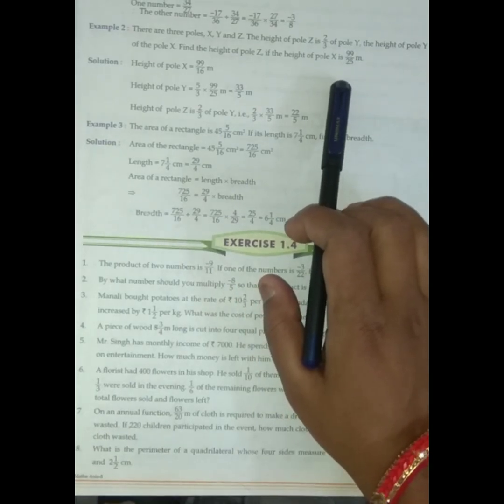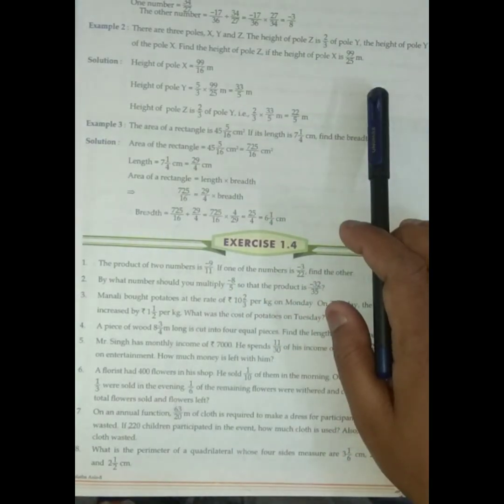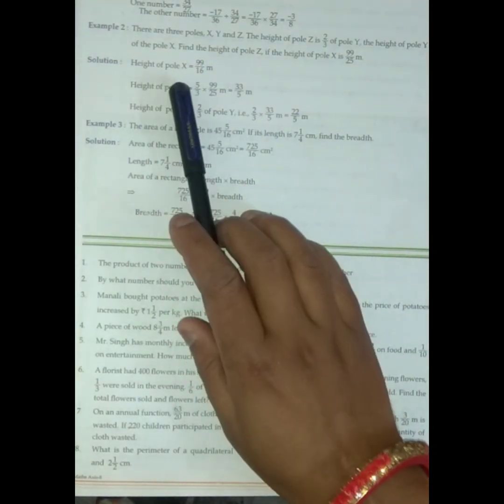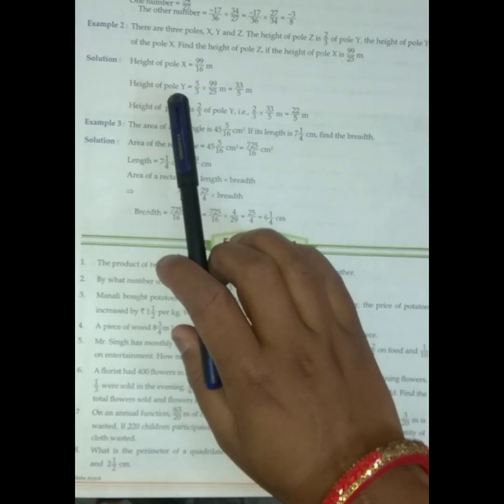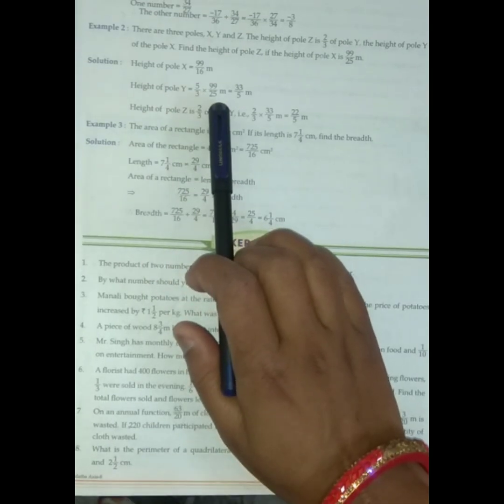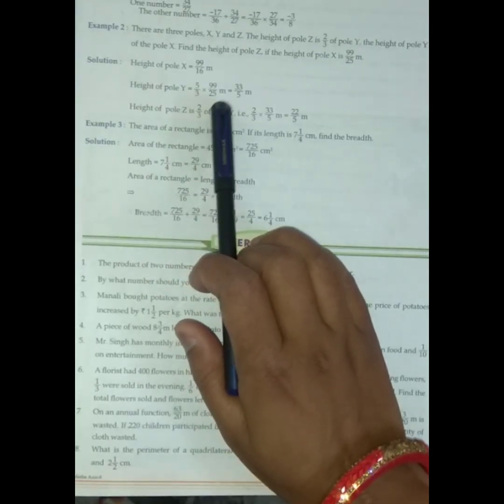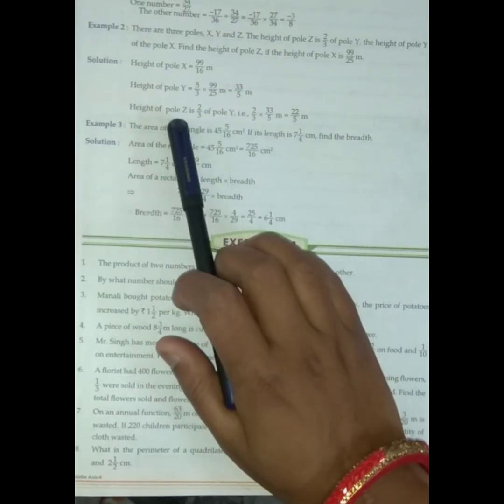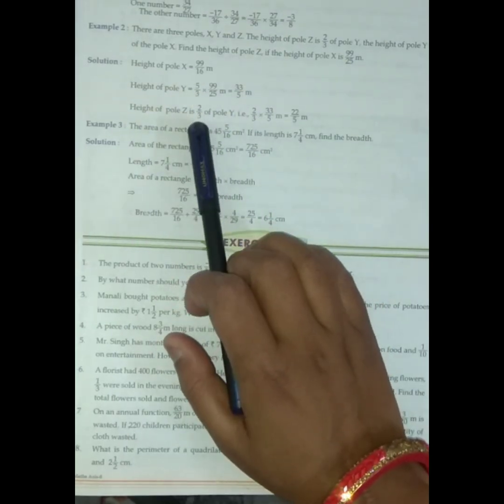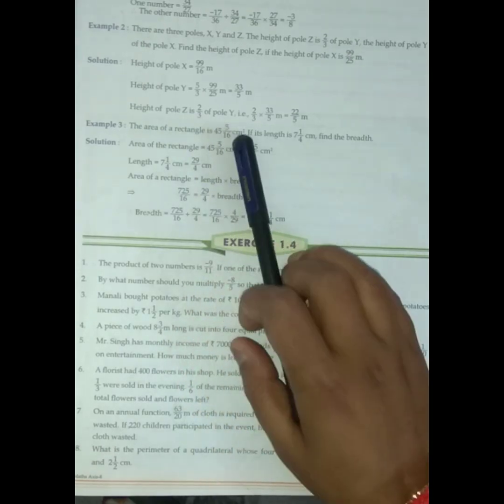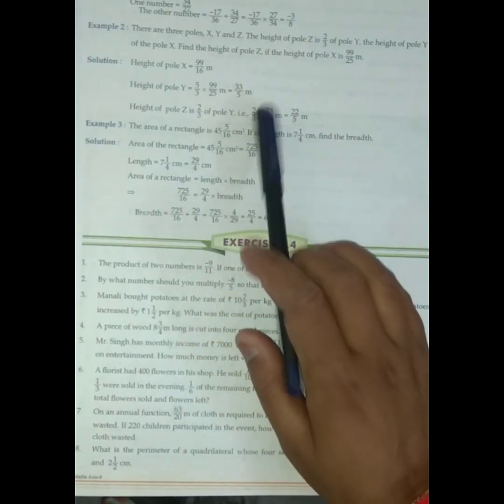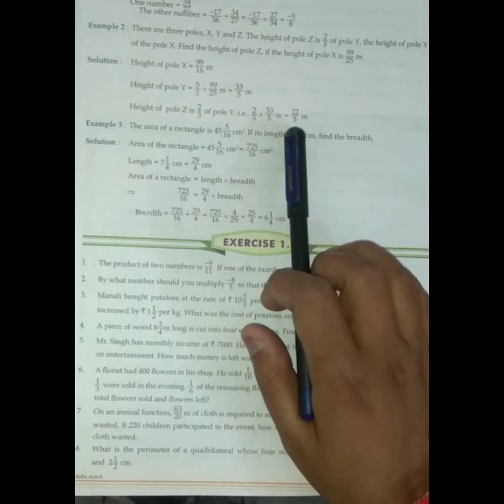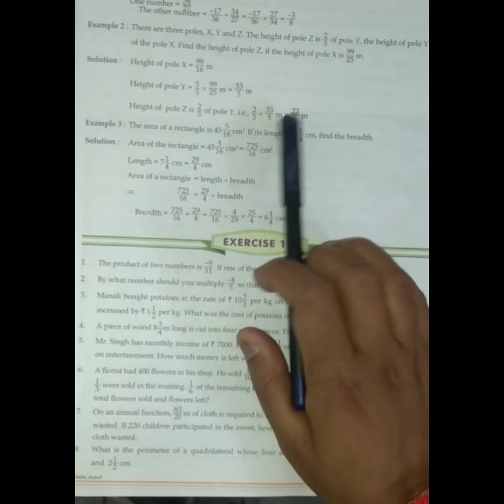Okay, so we have to find the height of pole Z. The height of pole X is this one. Pole Y is this one, into this one. So we got this much. And the height of pole Z is 2 by 3 of pole Y. That is 2 by 3 into 33 by 5 meter, is equal to...